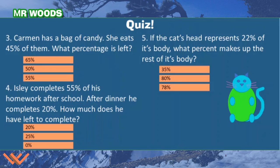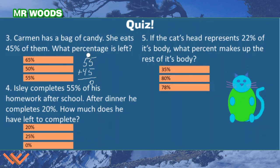Number three: Carmen has a bag of candy. She eats 45% of them. What percentage is left? Could it be 65%, 50%, or 55%? Well, 55 plus 45 equals: 5 plus 5 is 10, carry the 1 — 1 plus 5 is 6 plus 4 is 10 — that gives me 100. So the answer is 55%. See how you can take the time to double-check and validate your answer.